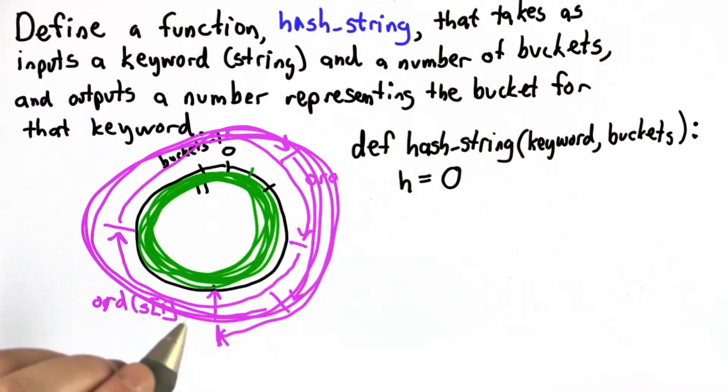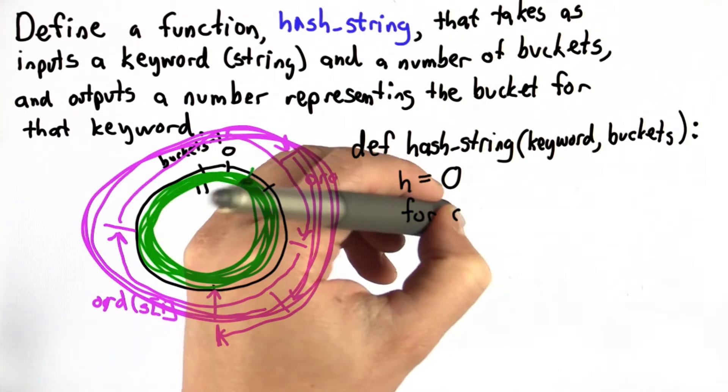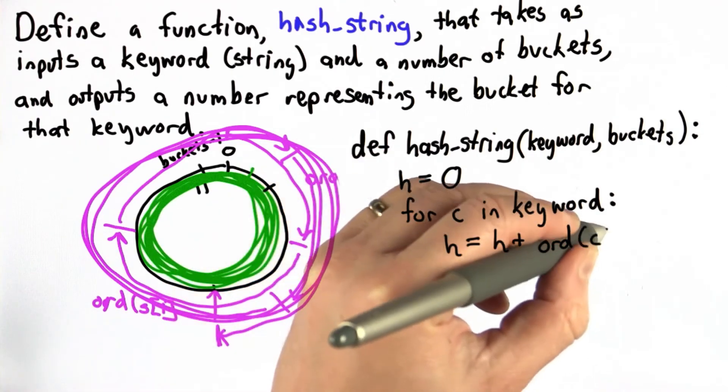Now we want to go through the characters in the keyword. So we'll have a for loop that goes through each character in keyword. And for each character, we want to add to the hash. So we're going to add to the hash the value of that character.